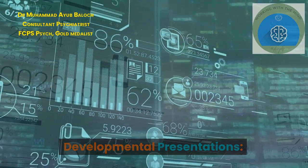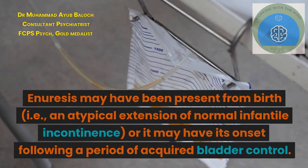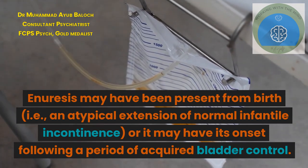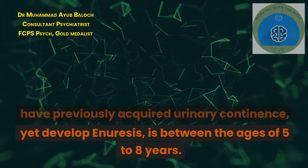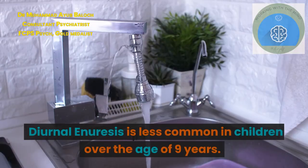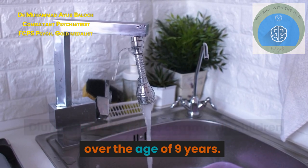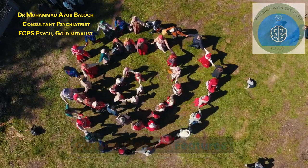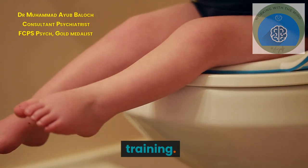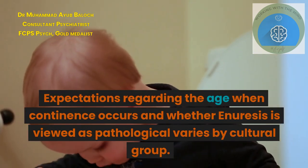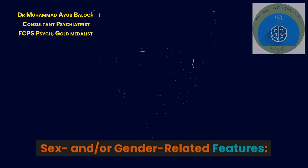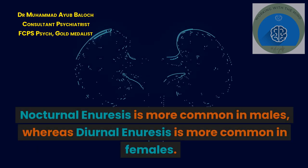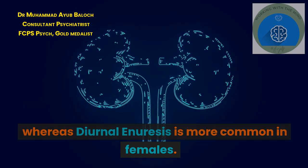Enuresis may have been present from birth as an atypical extension of normal infantile incontinence, or it may have its onset following a period of acquired bladder control. The common age of onset for children who develop enuresis after previously acquiring urinary continence is between 5 to 8 years. Diurnal enuresis is less common in children over the age of 9 years. Cultural variation exists with regard to toilet training; expectations regarding the age of continence and whether enuresis is viewed as pathological varies by cultural group. Nocturnal enuresis is more common in males, whereas diurnal enuresis is more common in females.